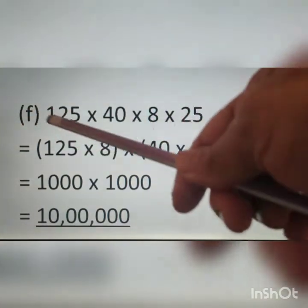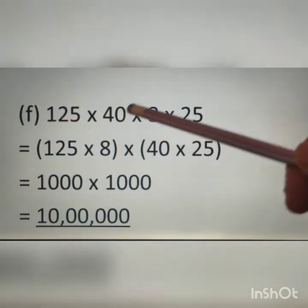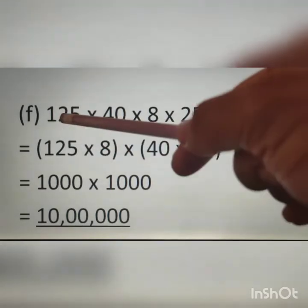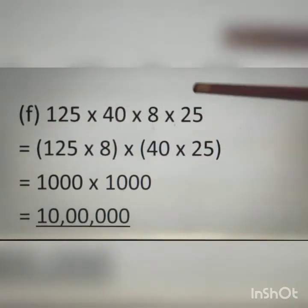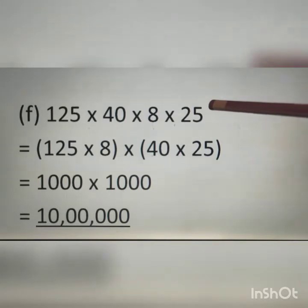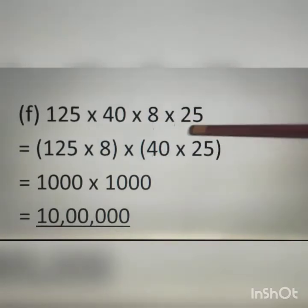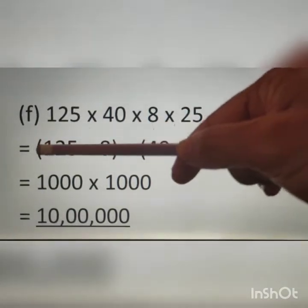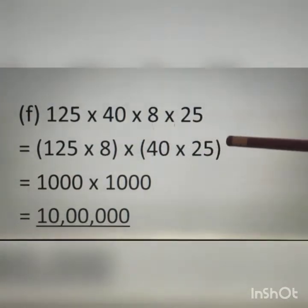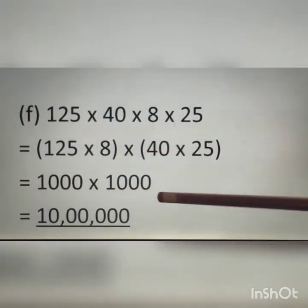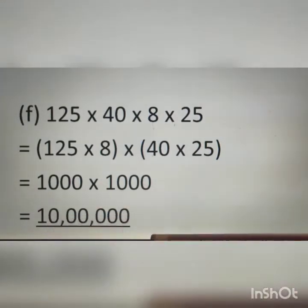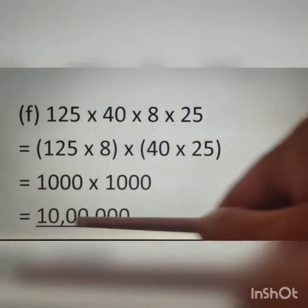Question F: 125 multiplied by 40 multiplied by 8 multiplied by 25. There are 4 numbers, so I rearrange them in pairs: 125 and 8 together, and 40 and 25 together. We know 25 multiplied by 4 is 100, so 40 multiplied by 25 is 1000. And 125 multiplied by 8 is also 1000. Therefore, 1000 multiplied by 1000 equals 10,00,000.